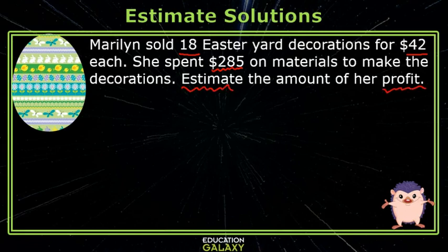Remember, profit is the amount of money that you make after you take out expenses. We first have to figure out how much money she got from the yard decorations. If I sold 18 yard decorations for $42 each, I would multiply to get the total amount.